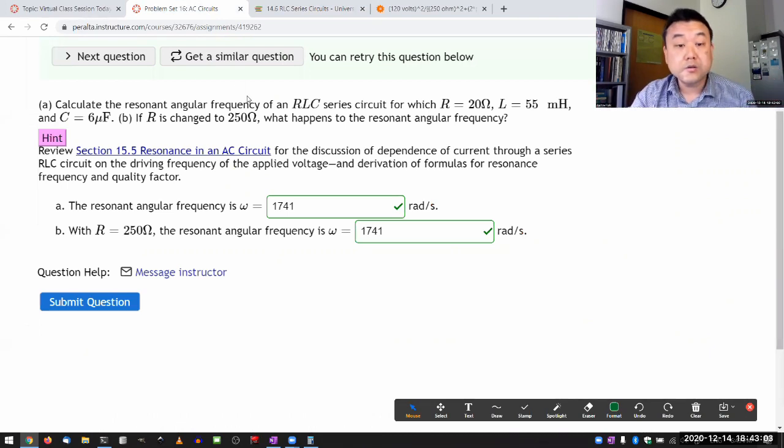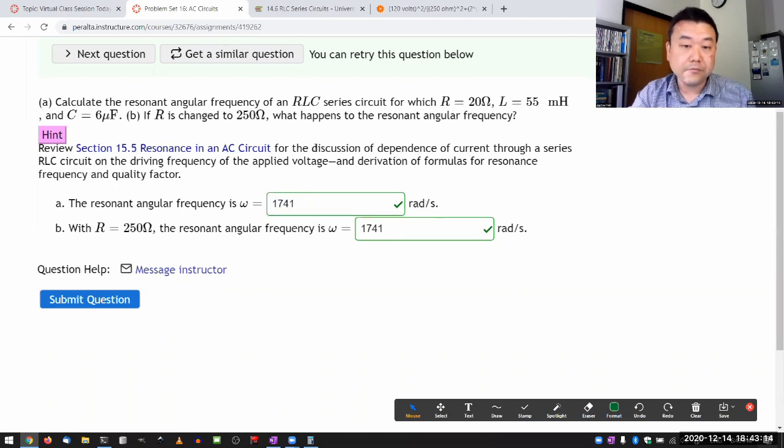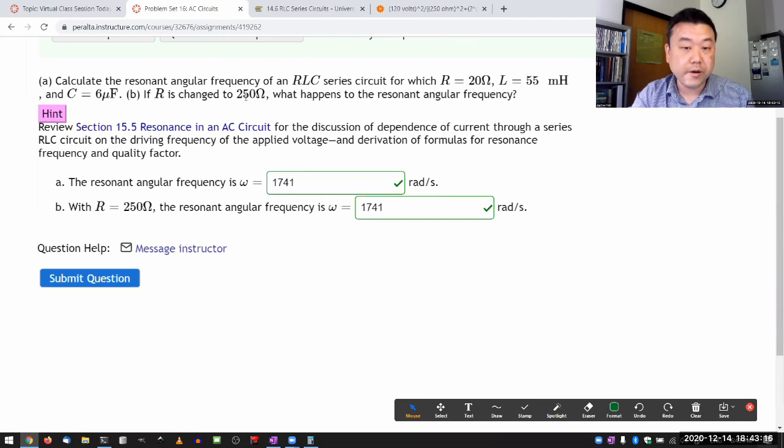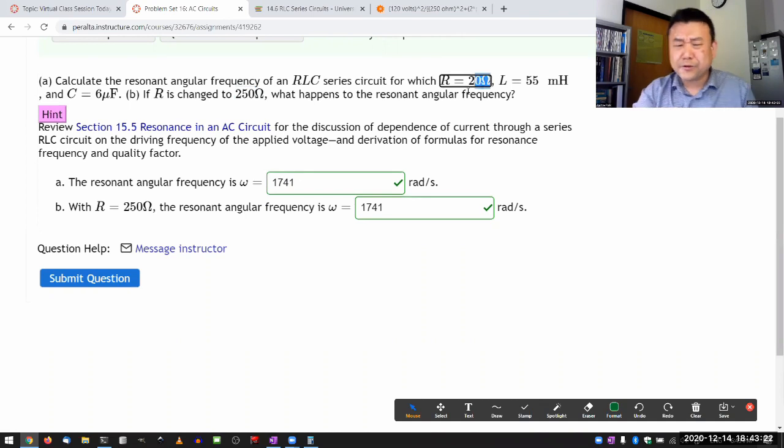But what I want to highlight is that this question is not about that. It's about a driven circuit. So R can be actually quite large. Even then, there is the one frequency where the current is maximized, and that's this frequency. The value of the maximized current is quite different for R equals 250 ohm versus R equals 20 ohm. But that's not what the question is getting at.